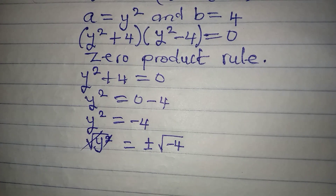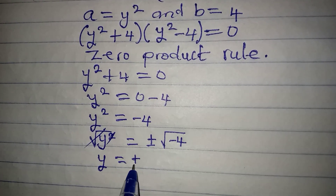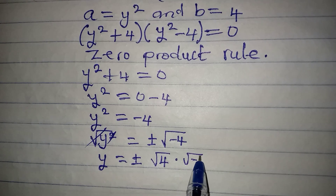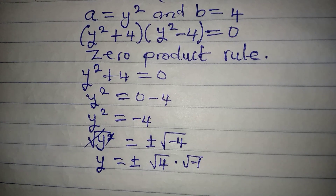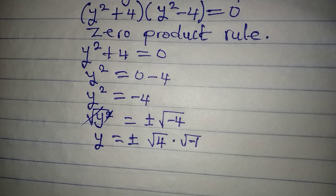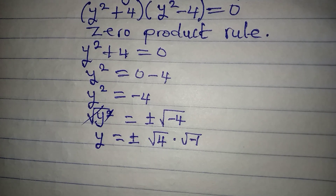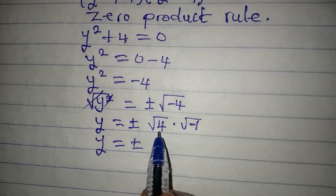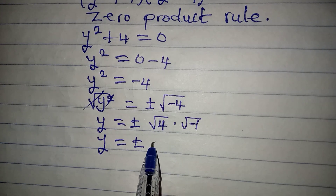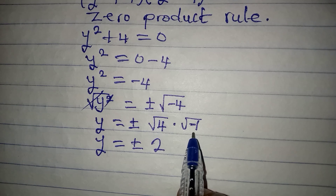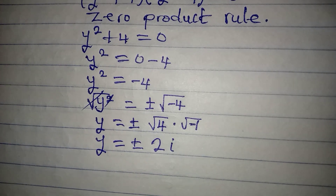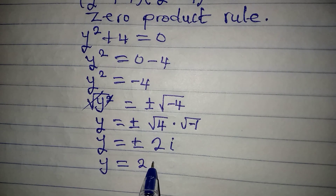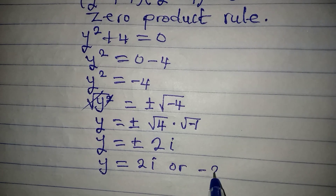This and this will cancel, so y will be equal to plus or minus the square root of negative 4. I want to separate what we have here: that will be square root of 4 multiplied by square root of negative 1, because when multiplying two roots you can combine them to give square root of negative 4. So y will be equal to plus or minus 2 — since square root of 4 is 2 — and square root of negative 1 gives an imaginary answer, which is i. This means that y equals 2i or negative 2i.